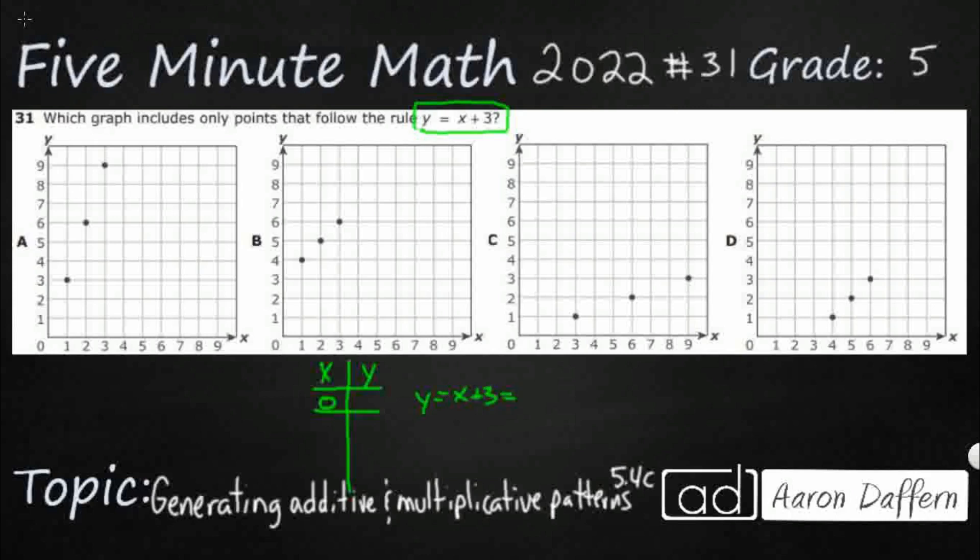We're going to say y equals x plus 3. So we're going to substitute in a zero for that x. So zero plus three equals three. So if we had a zero plotted, we would get three as a y.